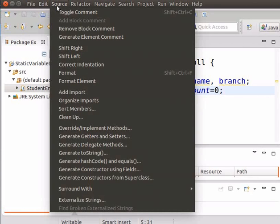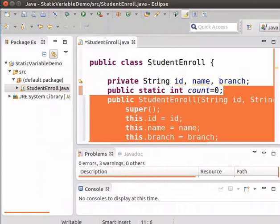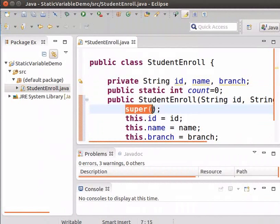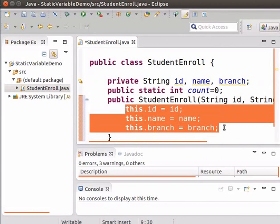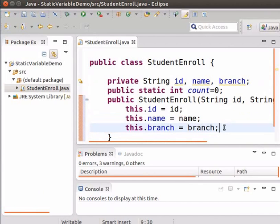Now click on source and select generate constructor using fields. Delete the super keyword from the generated code. This constructor can initialize the values of the id, name and branch fields. We also need to increment the value of the variable count by one every time an object is created.